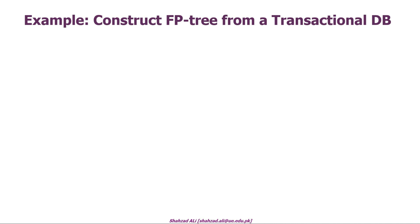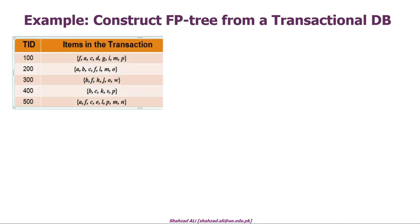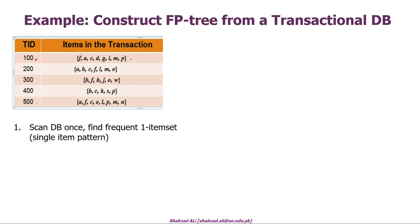Let's look at a simple example for this transactional database. It has only five transactions: 100, 200, 300, 400 and 500, and each transaction contains a set of items. For example, the first transaction ID 100 contains items F, A, C, D, G, I, M and P. We can scan the database once using FP-Tree; the first step is to scan the database to find frequent item sets which contain a single item or single pattern.